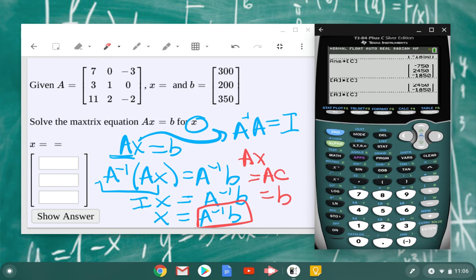So my answer then is going to be 750, 2450, and negative 1850.